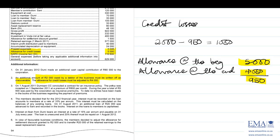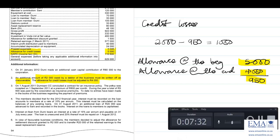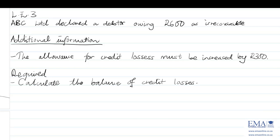The allowance for credit losses was initially 5,000 and was adjusted to 4,050. Taking the difference, the allowance went down by 950, which is good for the entity. That means credit losses also went down by 950, giving a final credit losses figure of 1,050.